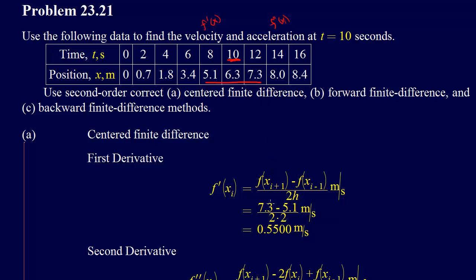We have f at xi plus 1, so that'll be 7.3, and minus f at xi minus 1, so that'll be 5.1, all divided by 2h. h in this case is 2, so we get an approximation of 0.5500, and our units are meters per second for velocity.